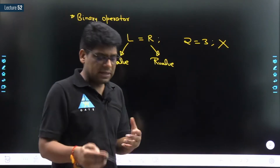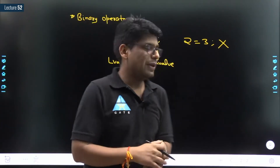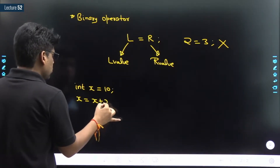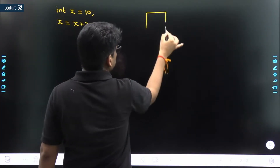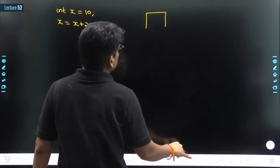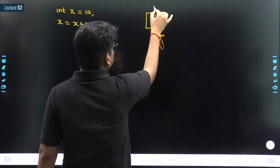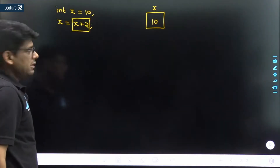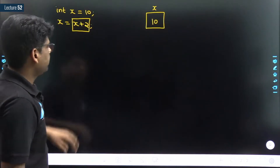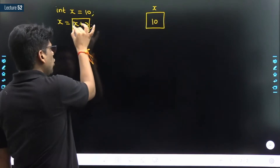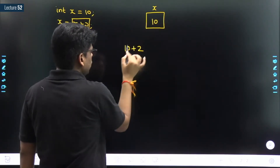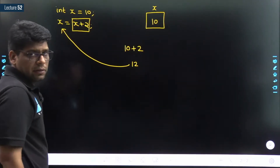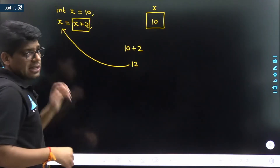In this session, we cover more assignment operators — basically shortcuts for a combination of operators. If we have `int x = 10` and `x = x + 2`, from the first line, somewhere in memory a variable x is created with value 10. Since the assignment operator works right to left, first the expression `x + 2` is evaluated: 10 + 2 = 12, and then 12 is assigned to x. So two things happen: addition and then assignment.